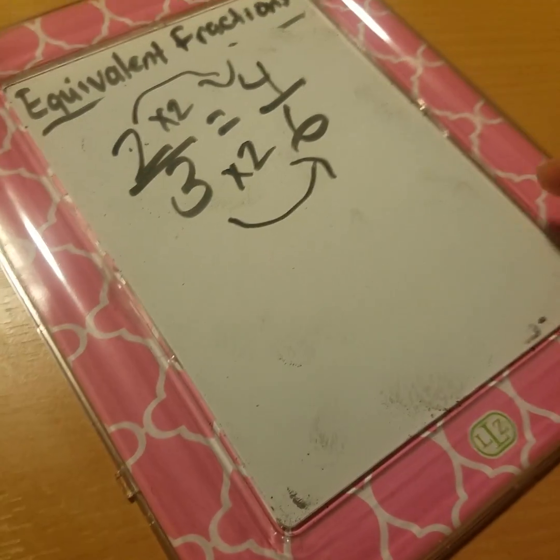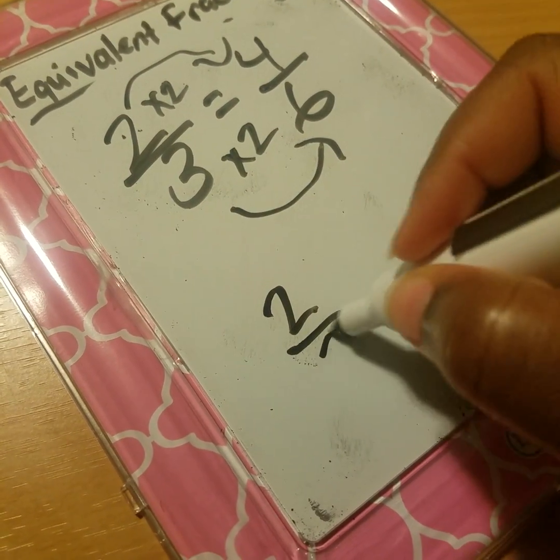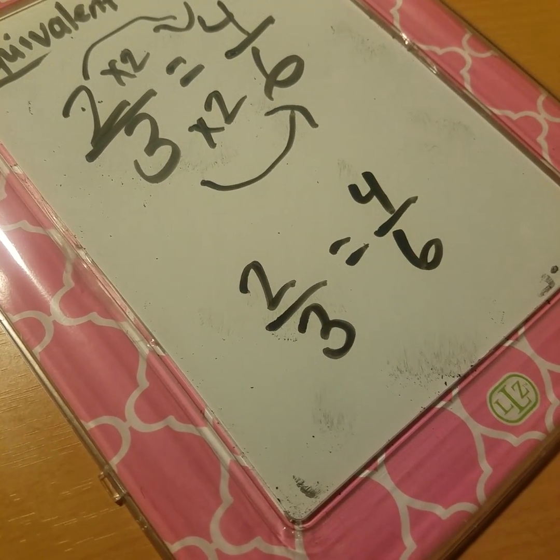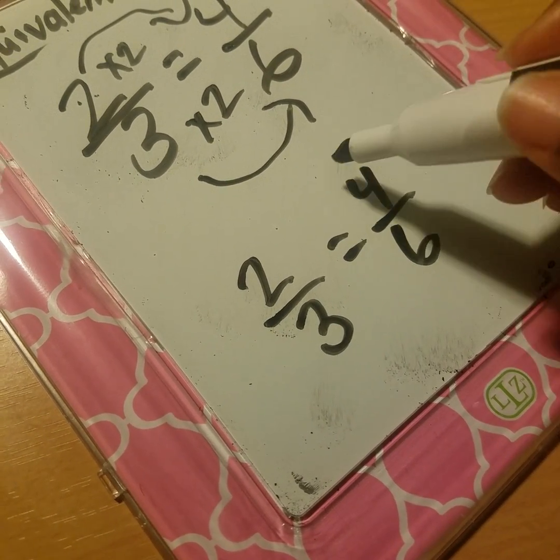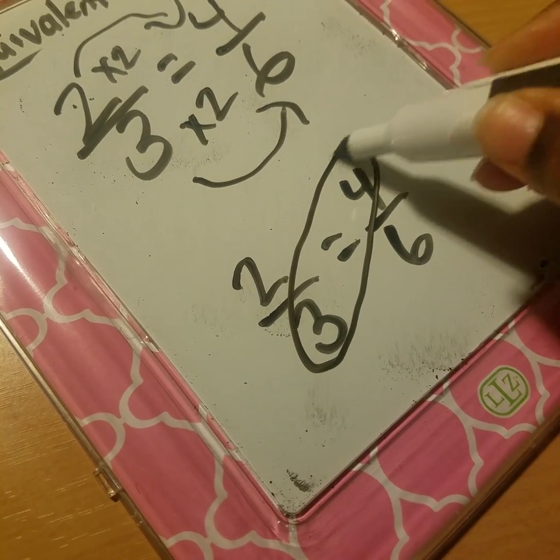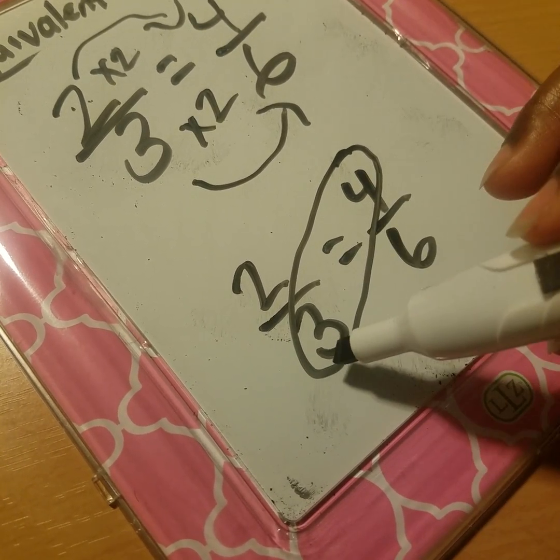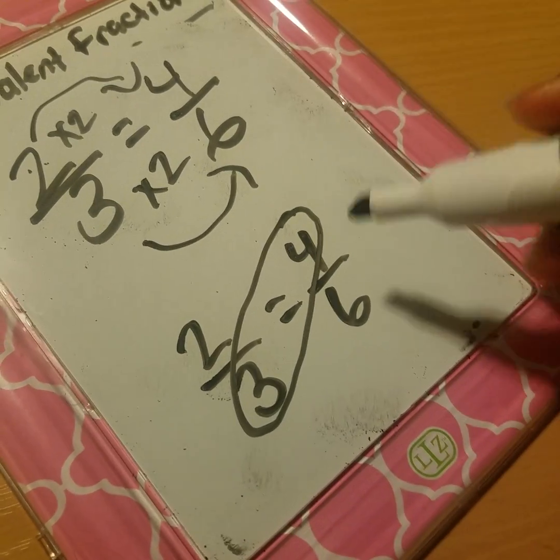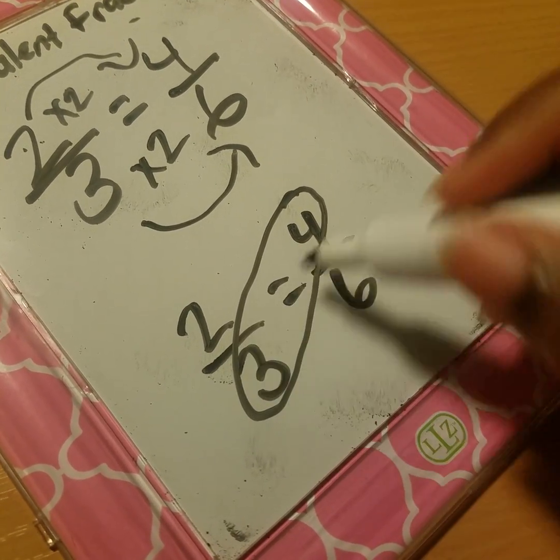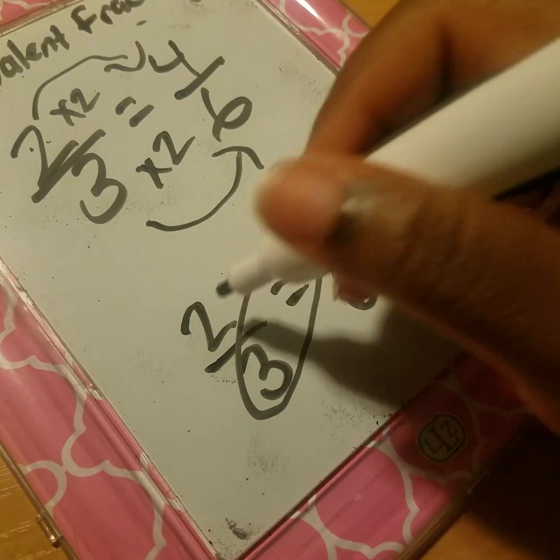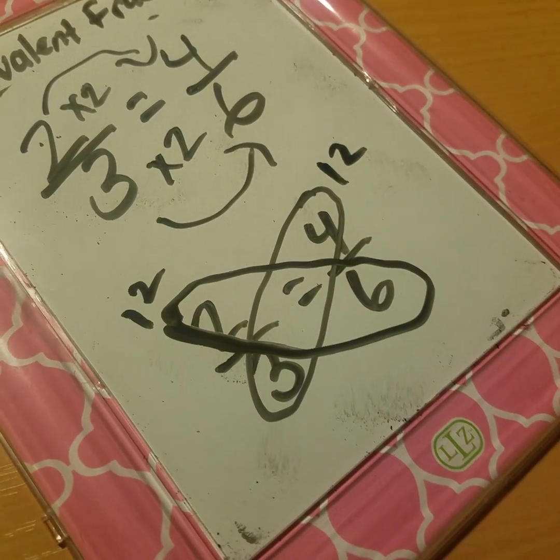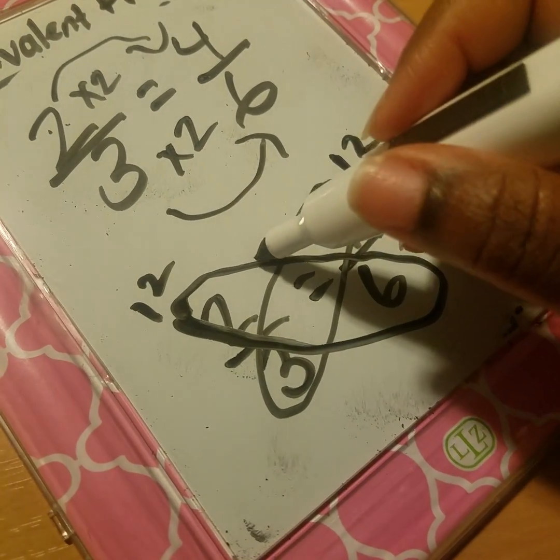Another procedural strategy is called the butterfly method. You multiply this numerator by this denominator, and this numerator by this denominator, and both sides should equal the same amount if they're equivalent. So three times four is twelve, and two times six is twelve. I call it the butterfly method because it kind of looks like a butterfly.